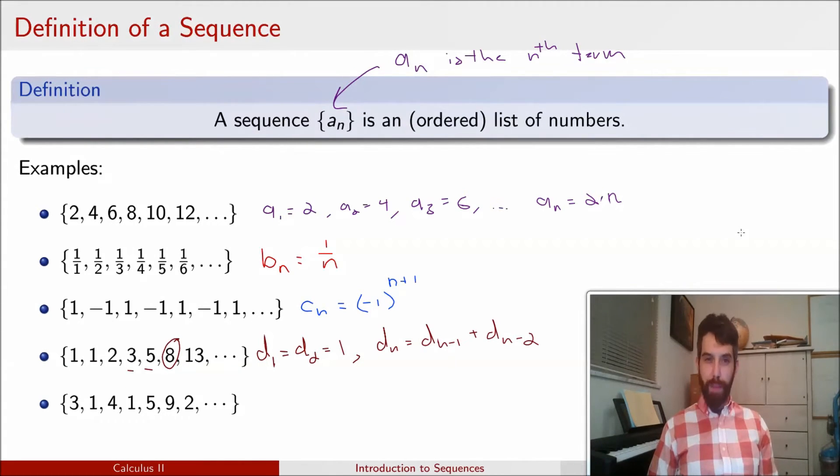Finally, for the last one here, I'm not actually going to write anything down. These are just the digits of pi. I'm not claiming I have some formula for it. I'm just saying that the nth term here is the nth digit of pi. So sequences can be all kinds of things. They don't have to even have any pattern at all. They can just be a bunch of random numbers. It doesn't really matter.